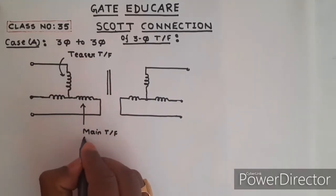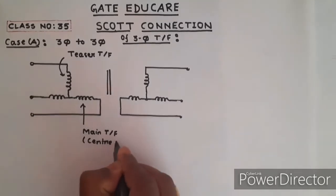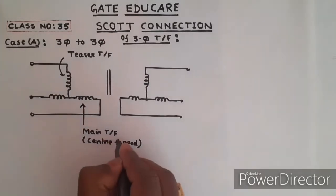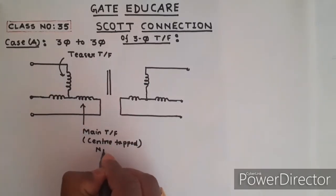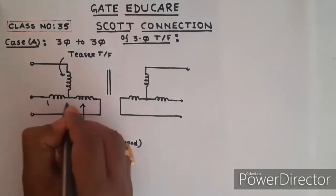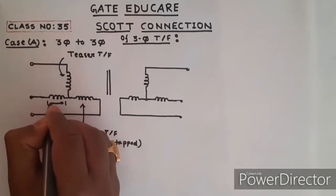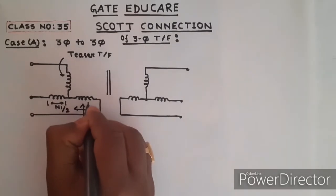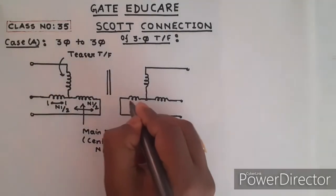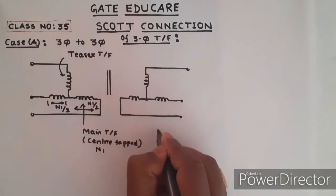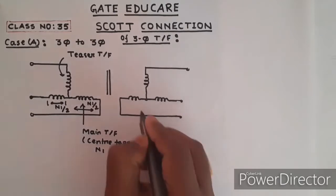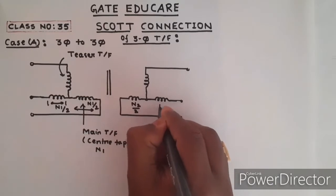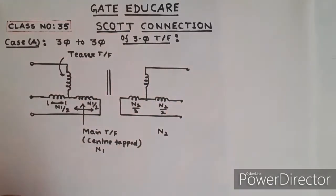The main transformer should be center-tapped. That means if the main transformer primary has N1 number of turns, then each half should be N1 by 2 turns. Similarly, if the secondary has N2 number of turns, each half should be N2 by 2 turns.